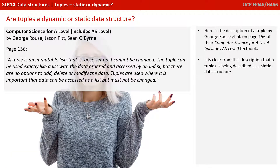Here's the description of a tuple by George Rouser et al on page 156 of their Computer Science for A-Level textbook. It says: a tuple is an immutable list — that is, once set up it cannot be changed. The tuple can be used exactly like a list with the data ordered and accessed by an index, but there are no options to add, delete, or modify the data. Tuples are used where it's important the data can be accessed as a list but must not be changed. It's really clear from this description that tuples are being described as a static data structure.